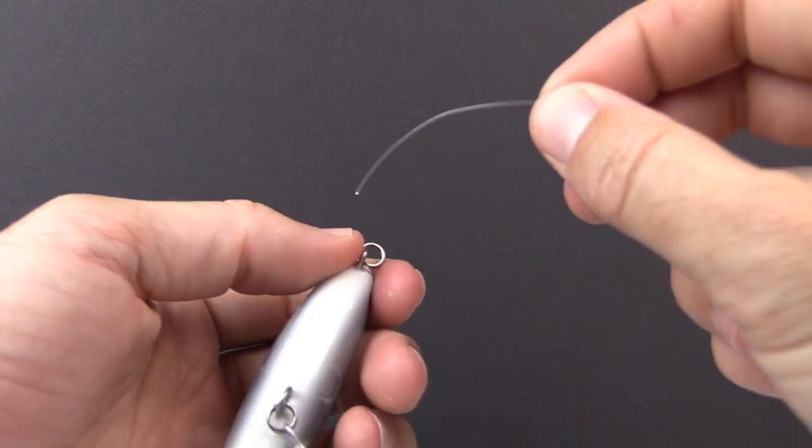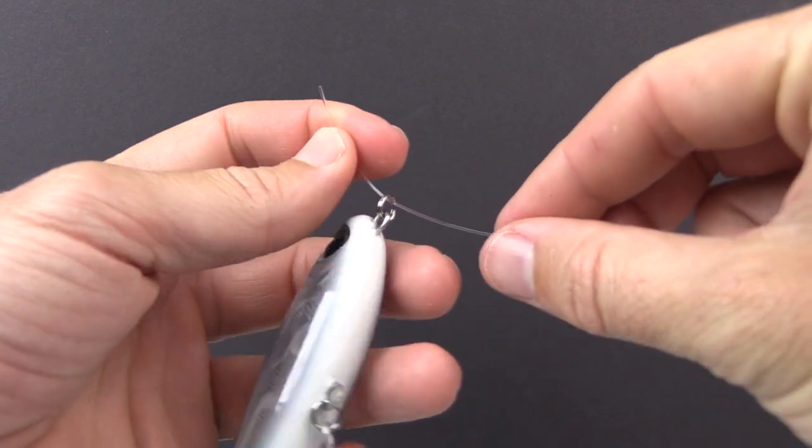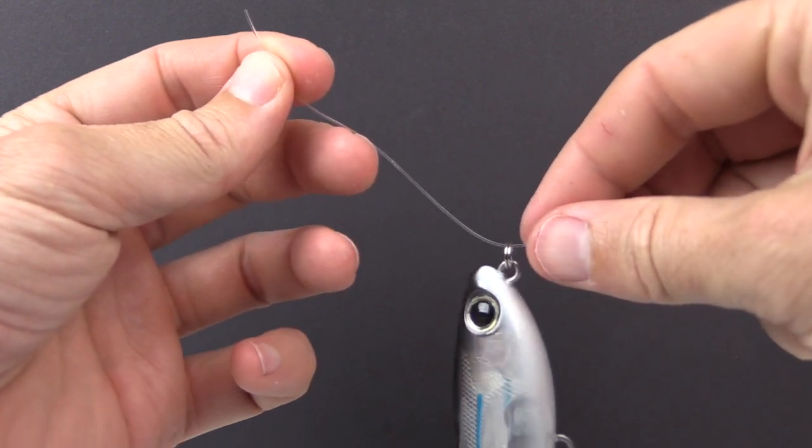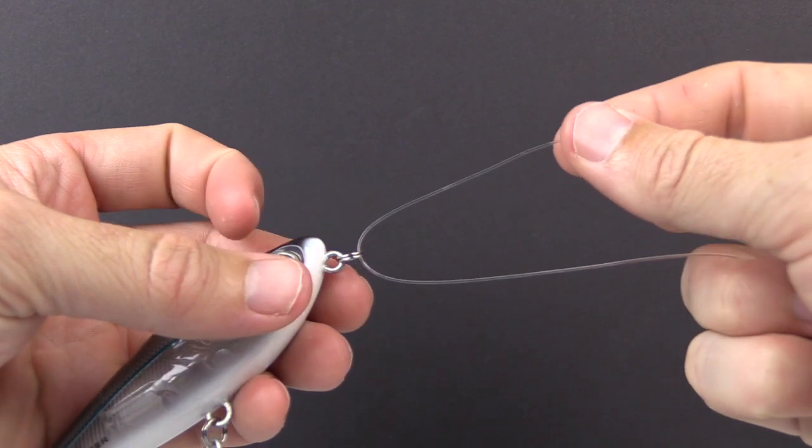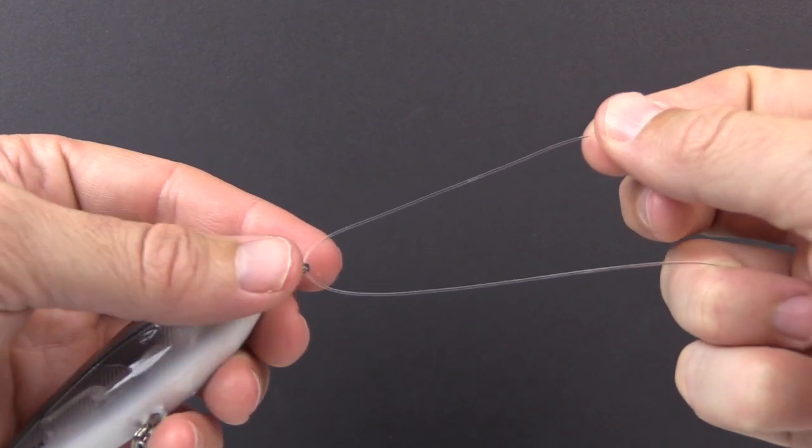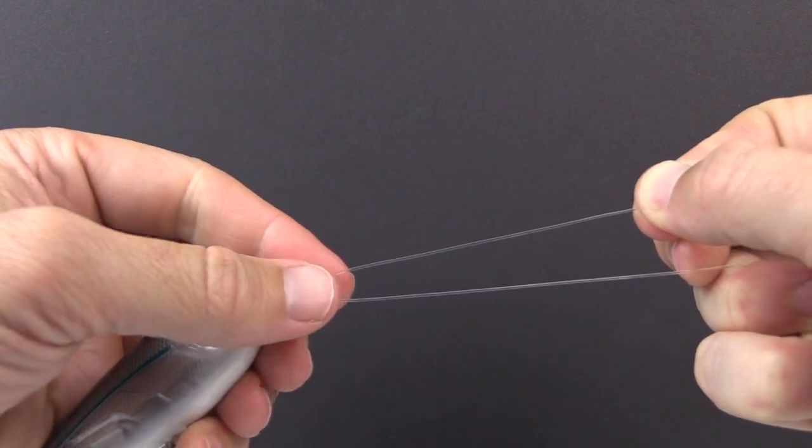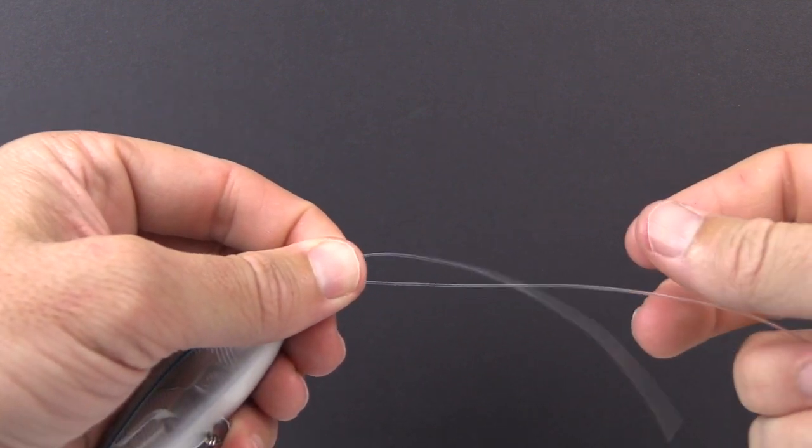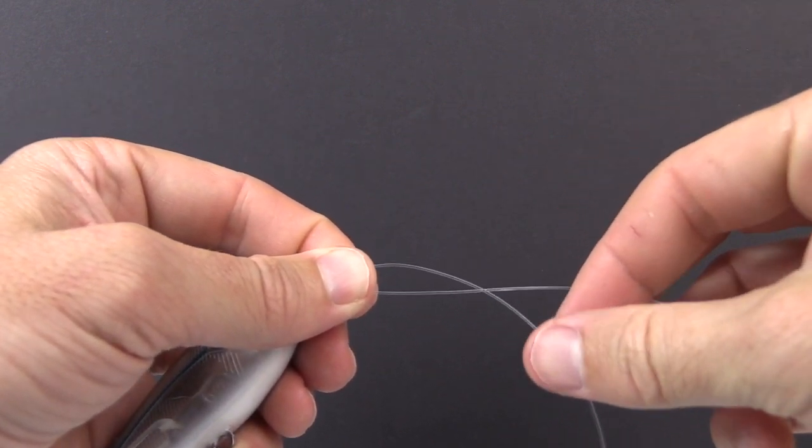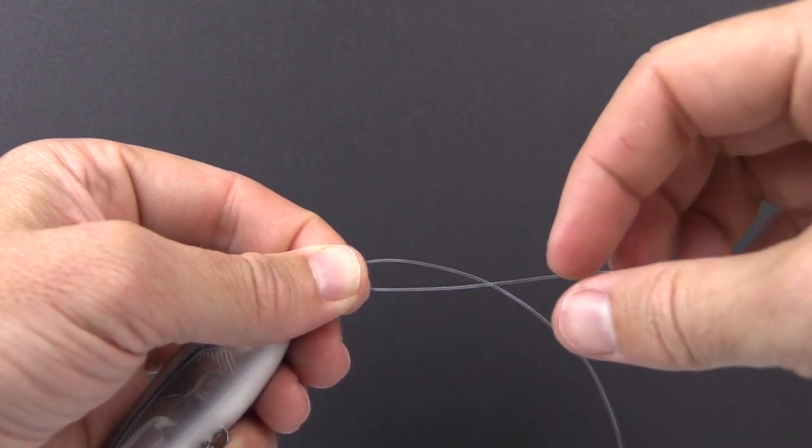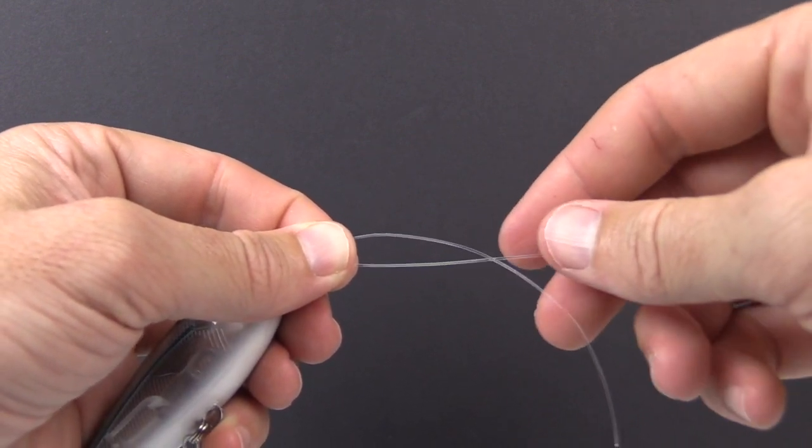First step is simply just to thread it through the lure or the hook, the eye of whatever you're going to be tying it to, and I like to get about maybe four inches of tag end hanging out towards the right. With my left hand I'll basically just grab and hold those lines in place. Keep a little bit of gap there and you'll see why that gap is needed here in a second.